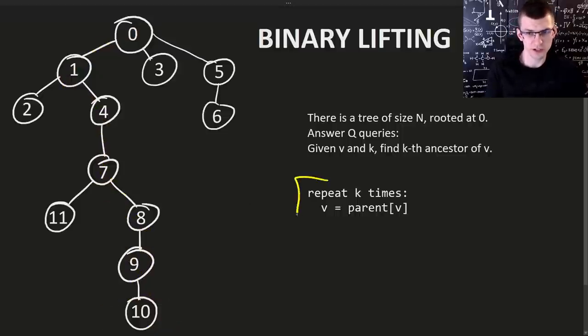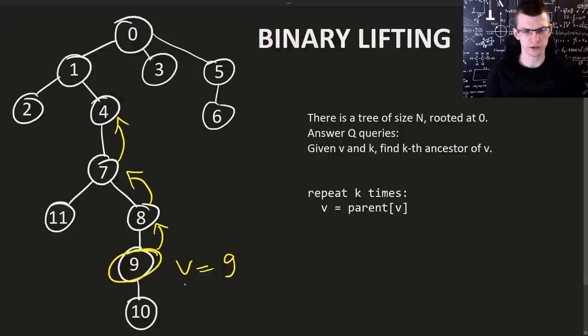The brute force is here very simple. We just keep going to the parent. Say for v equal to 9 you need to find the third ancestor. You just go once, second time and third time to the parent. So 4 is the answer. For v equal to 9, k equal to 3, the answer is this guy, 4. We just went three times up.